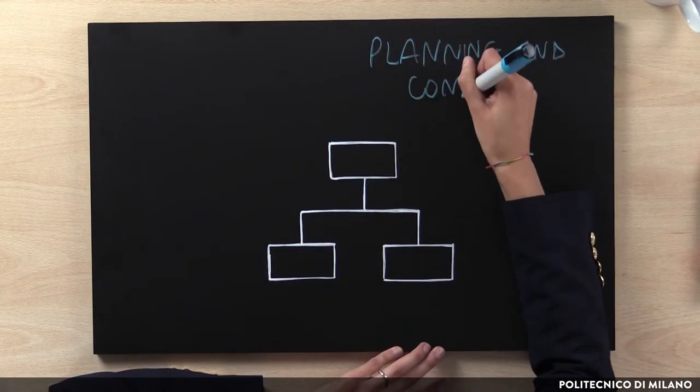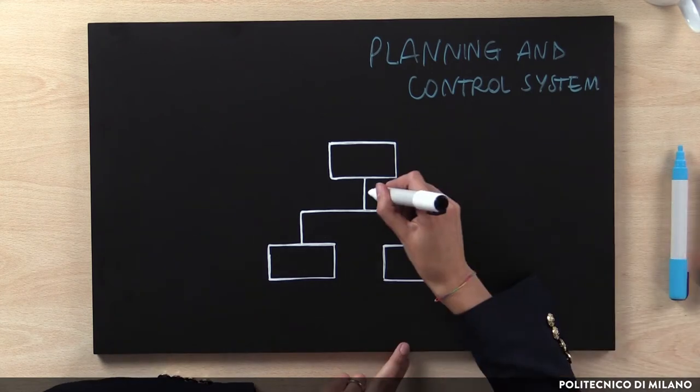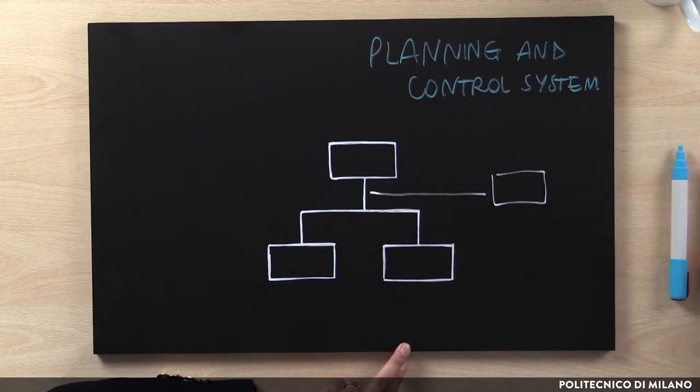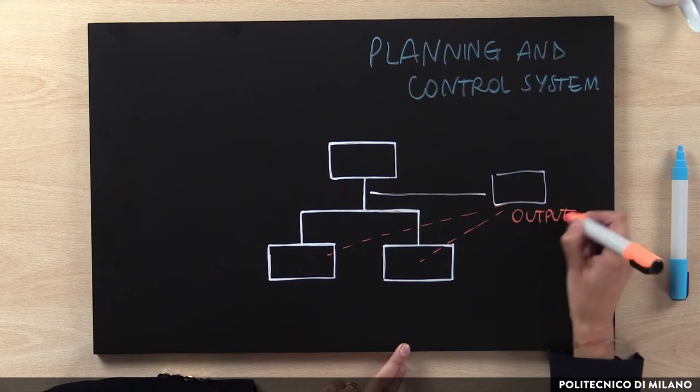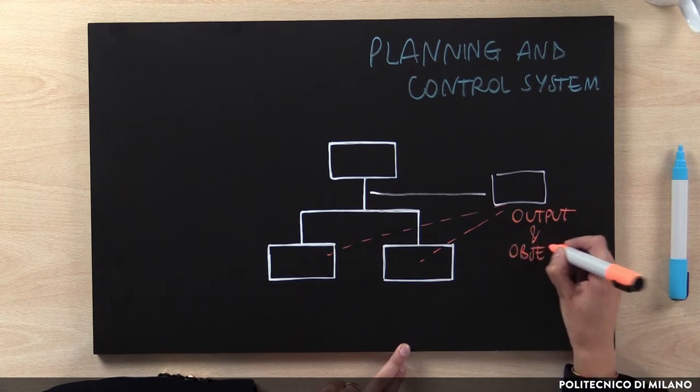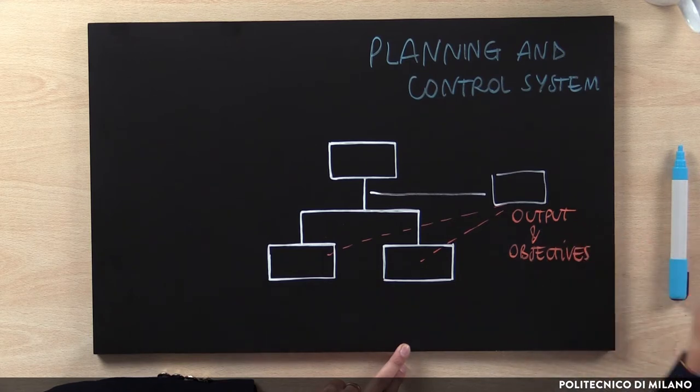We also have two other coordination mechanisms at the macro level which are not related to the organizational configuration of the company, but they play a fundamental coordination role. One is represented by the planning and control system. Planning and control systems define for each organizational unit the desired output and objectives to be achieved, and the actions to put in place to achieve them. Moreover, with planning and control systems we can measure and verify if and how the goals have been achieved. Typical examples of these systems are budgeting plans, strategic plans and improvement plans.